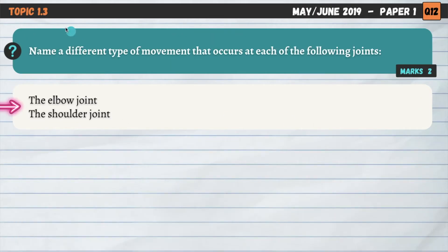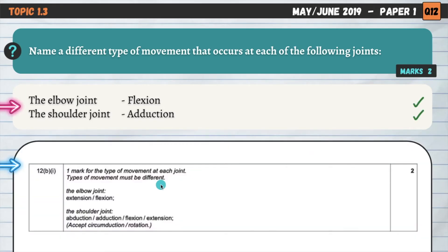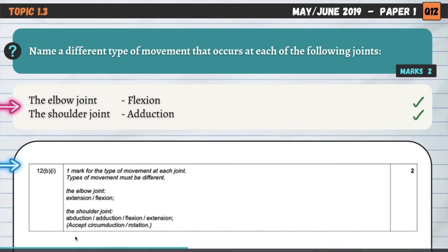Topic 1.3: name a different type of movement that occurs at each of the following joints — the elbow and the shoulder. The elbow joint is a hinge joint and is therefore only capable of flexing and extending — it can only move in one plane of movement. The shoulder joint, being a ball and socket joint, is capable of many different types of movement: abduction, adduction, flexion, extension, and circumduction and rotation are also possible.